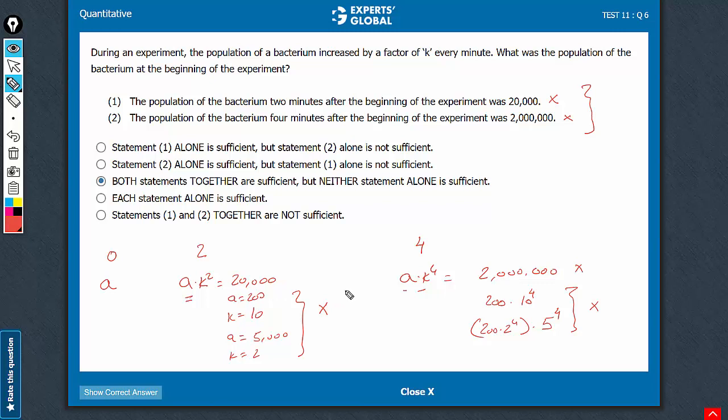Combining, now we have two equations and two variables. This can be solved. Again, don't waste your time finding out the value. If you were to find it, you can just divide the two equations. You will see that on the left-hand side, a will get cancelled. We will have k square is equal to here 4 zeros and here 6, so 10 square. k is equal to 10.